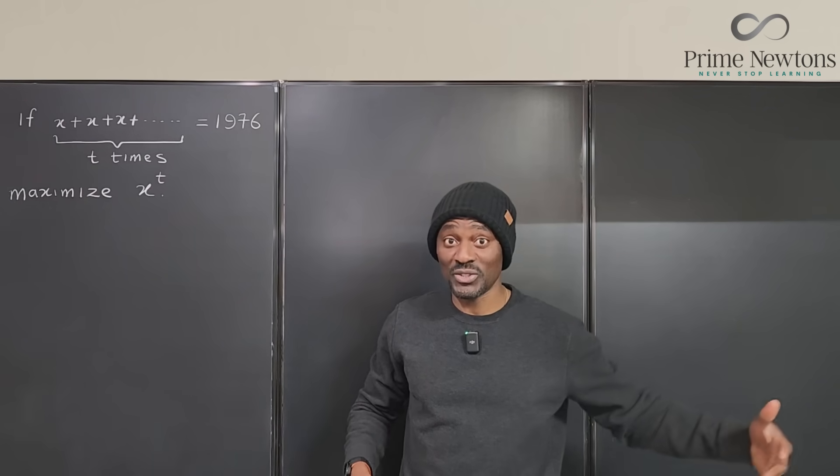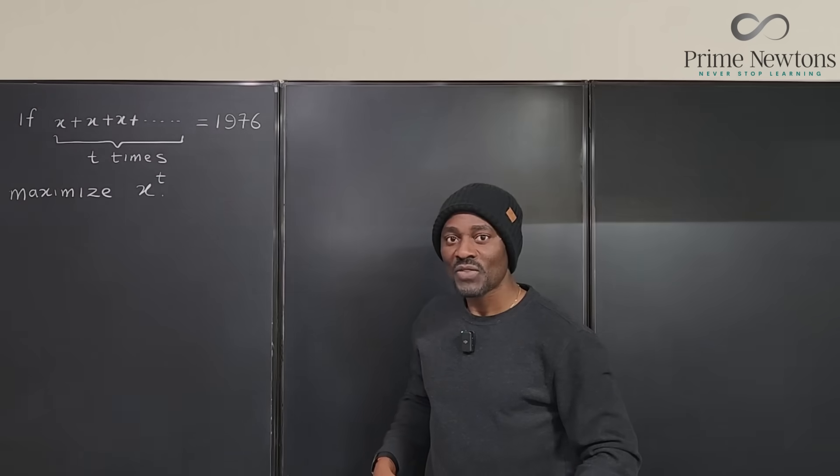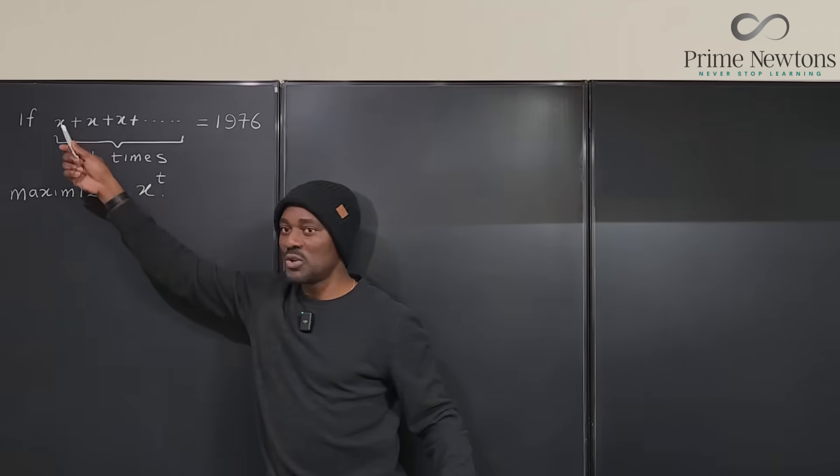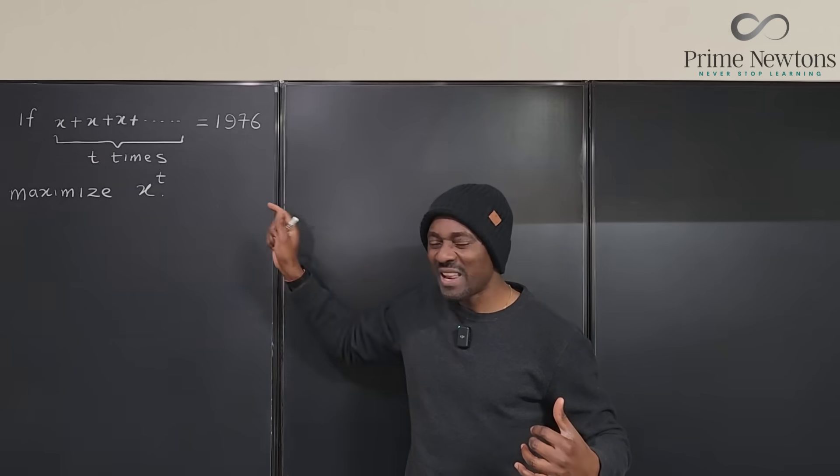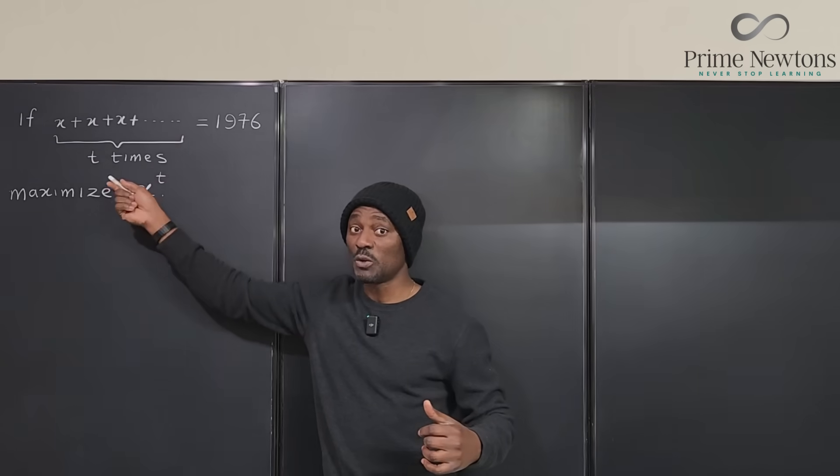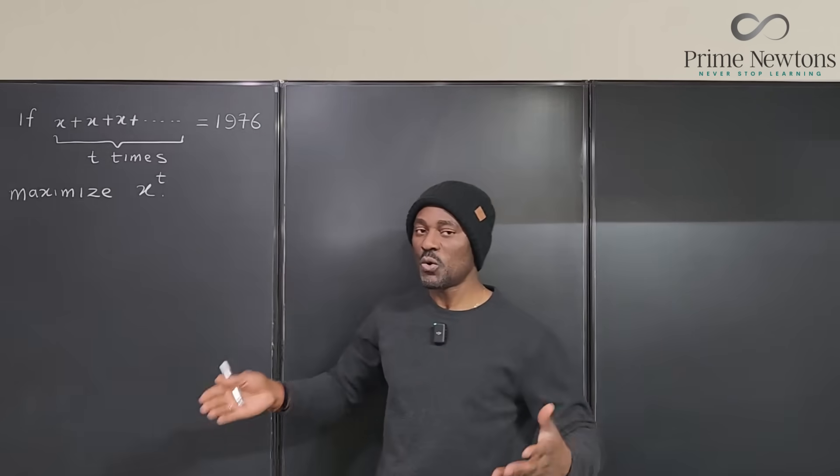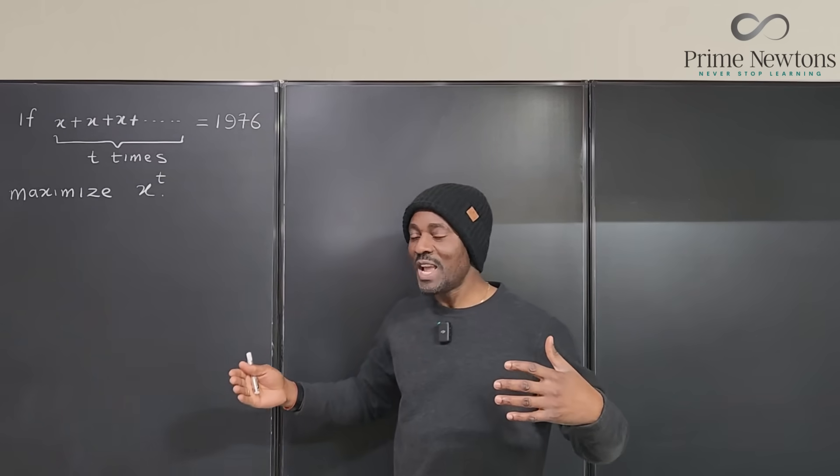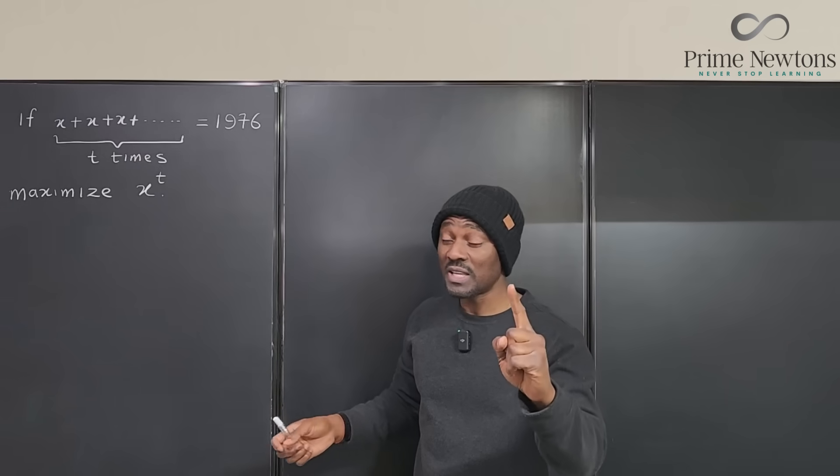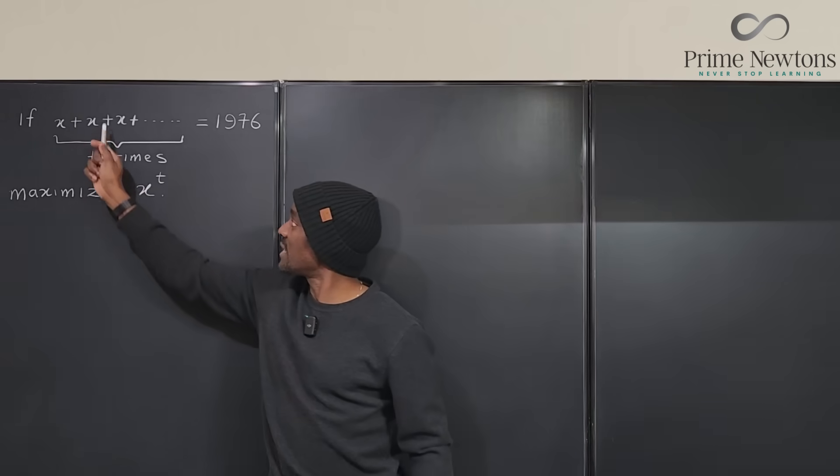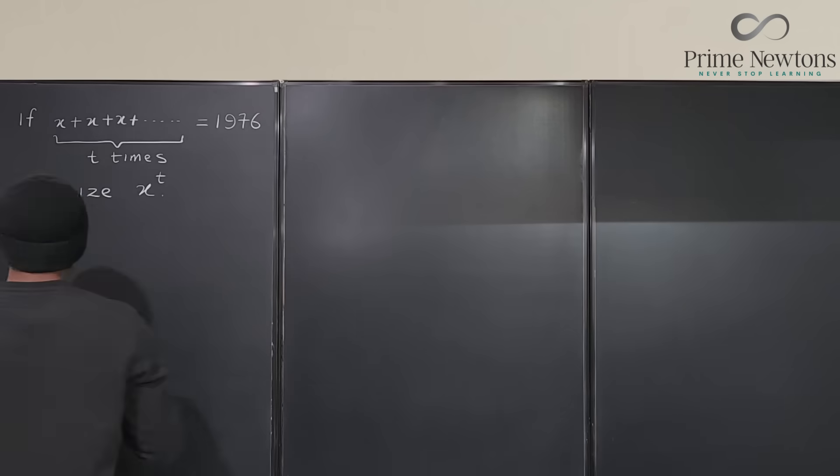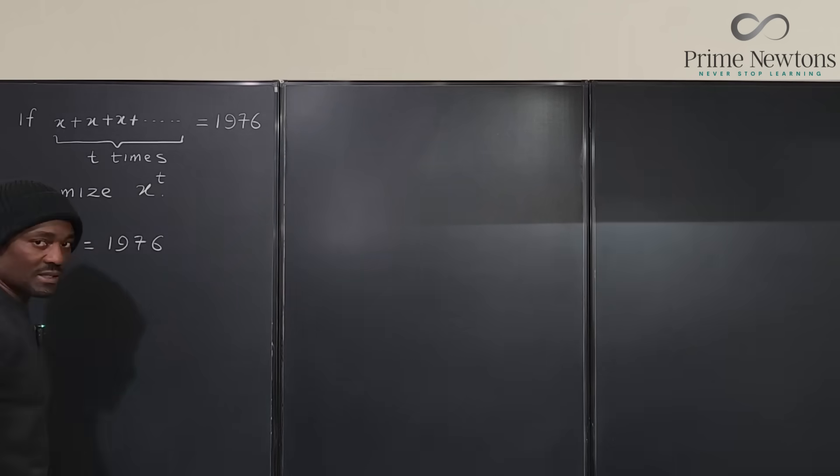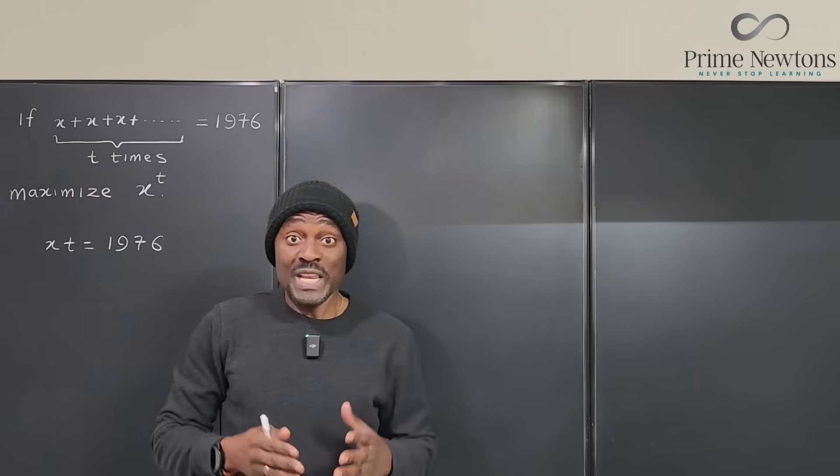So let's start. Let's say there's a certain number you're going to add up several times to get 1976 according to that problem. What can that number be? We don't know the number of times because we don't know what T is. One thing we can tell from this expression is that if you multiply X by T you're going to get 1976. So let's start with that. So X times T equals 1976, and we need to maximize X to the T.